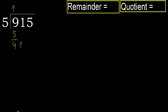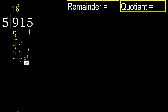Now we have 41. 5 multiplied by 9 is 45, which is greater. Multiplied by 8 is 40, which is not greater. So we subtract. Next, bring down to get 15.